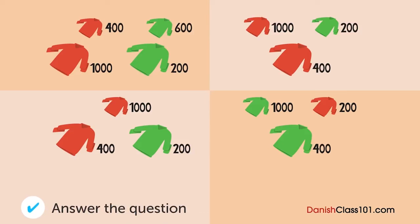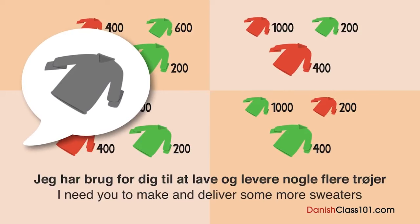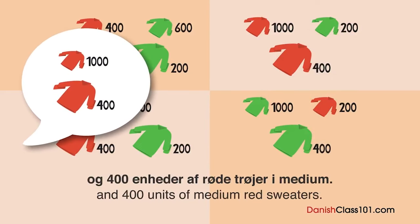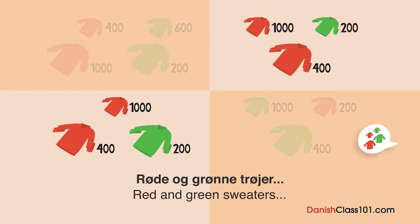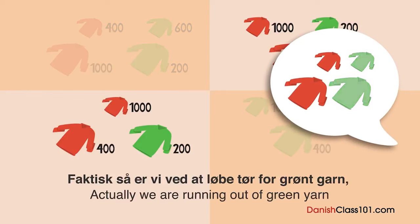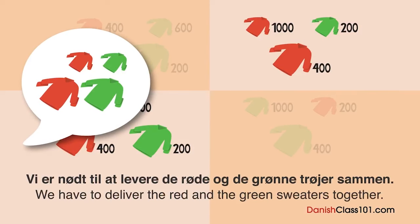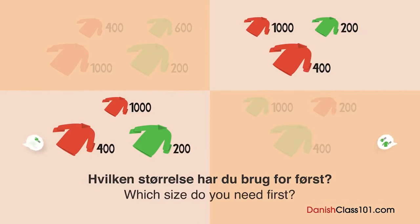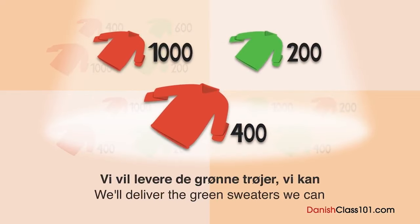Hvad kommer kvinden til at modtage først? En kvinde og en leverandør taler over telefonen. Vi har brug for 1000 enheder røde trøjer i small og 400 i medium, samt 600 enheder grønne i small og 200 i medium ved udgangen af måneden. Vi er ved at løbe tør for grønkaren og nødt til at få det fra en anden leverandør - vi laver røde trøjer først. Nej, vi er nødt til at levere røde og grønne trøjer sammen. Lav så mange grønne som muligt. Vi kan lave 200 enheder grønne - hvilken størrelse først? Vi har brug for de små. Vi leverer de grønne trøjer vi kan sammen med alle de røde.